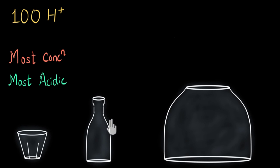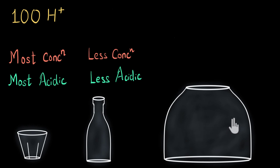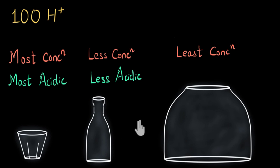The bottle also has 100 H+ ions, but those ions are distributed in a larger volume, so this solution is slightly diluted — less concentrated compared to the glass — and therefore less acidic. The tank also has the same amount of H+ ions, but they are distributed in a very large volume, making it a very highly diluted solution — the least concentrated. If you take a spoonful of this solution, you will find very little H+ ions in it, and that's why it is least acidic.